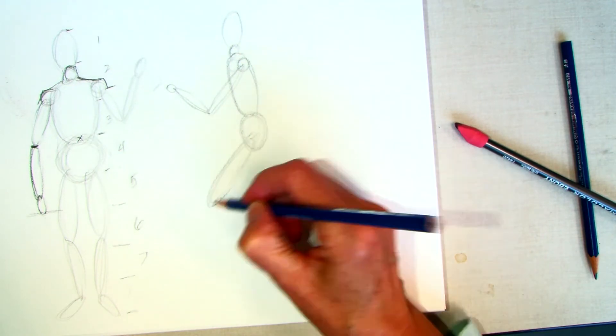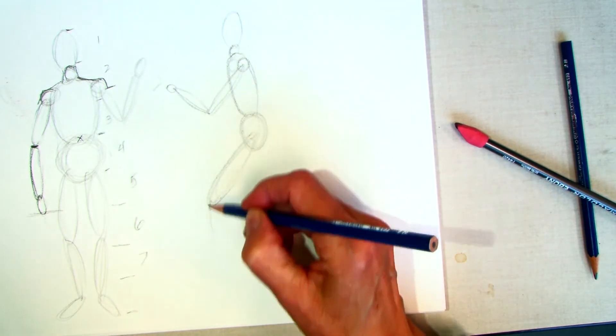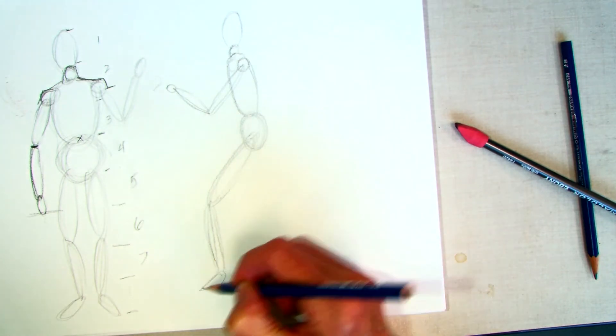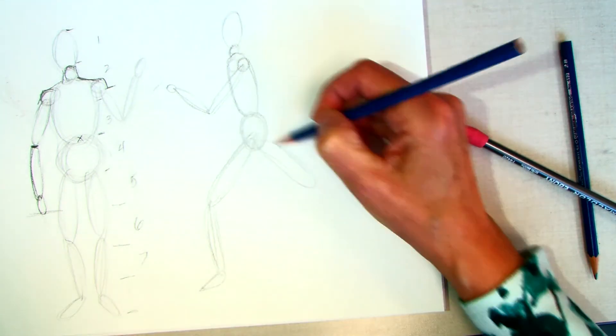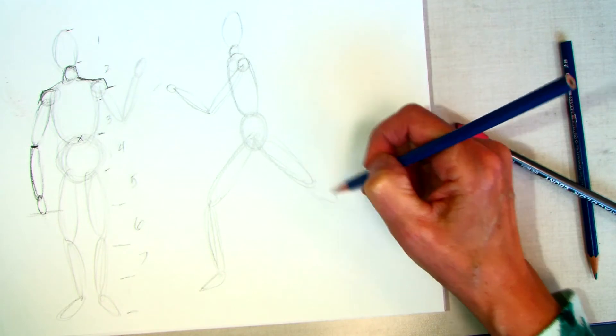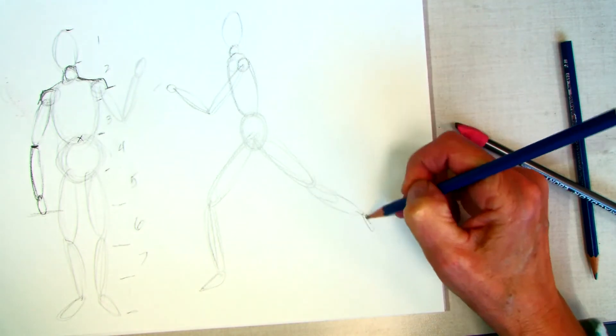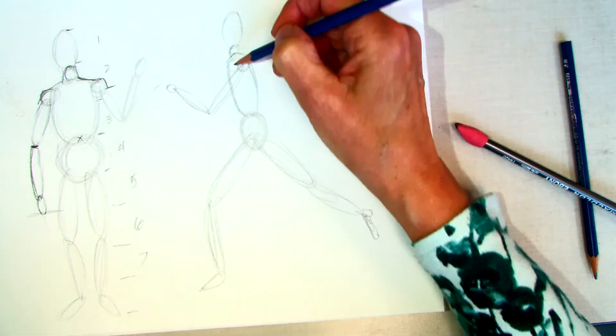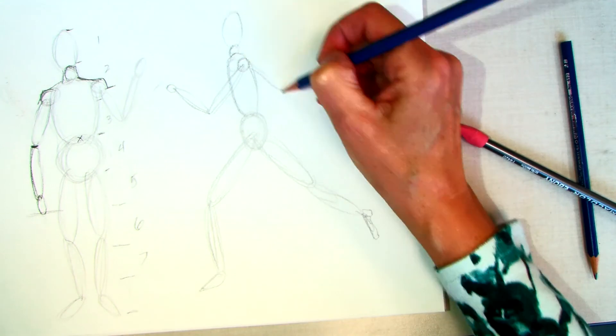We'll have one leg coming forward, make sure that's long enough, and then one going back from the other side, stretching out like we're really running. And then the other arm might be back here.